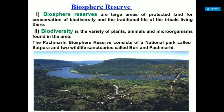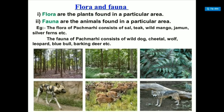Biodiversity means the variety of plants, animals, and microorganisms found in an area. The Pachmarhi Biosphere Reserve consists of a national park called Satpura and two wildlife sanctuaries — Bori and Pachmarhi. Flora found there includes sal, wild mango, jamun, and silver ferns; fauna includes wild dog, cheetah, wolf, leopard, blue bull, and barking deer.